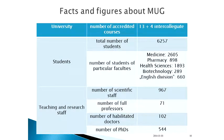Some facts and figures about the university: the number of students is around 6,000. Looking at the faculties, the most numerous is medicine, followed by health science, then pharmacy, the English Division, and biotechnology.